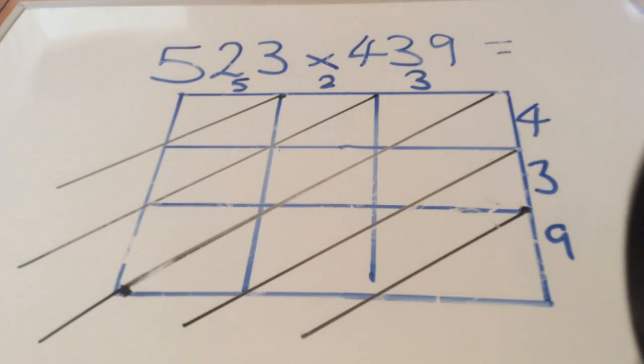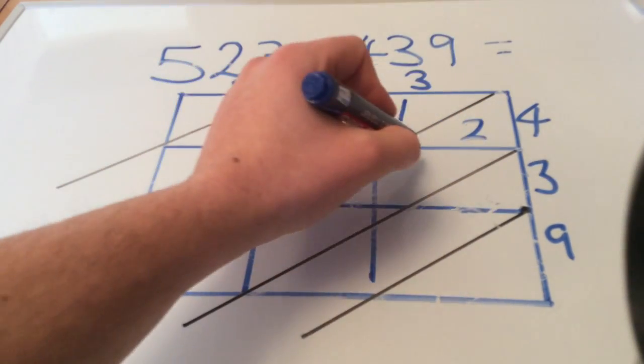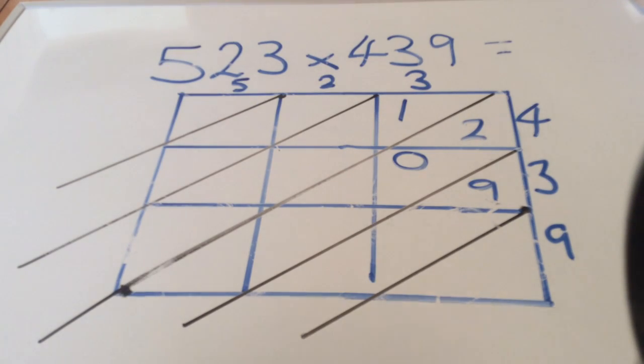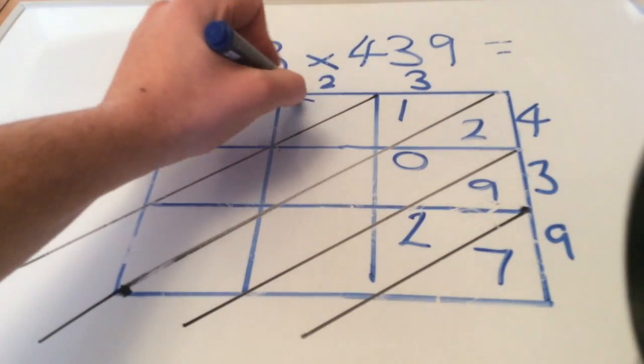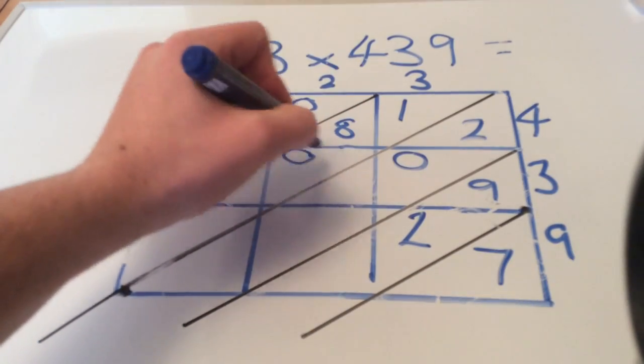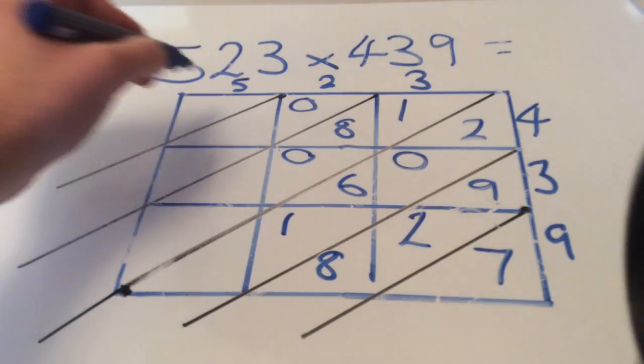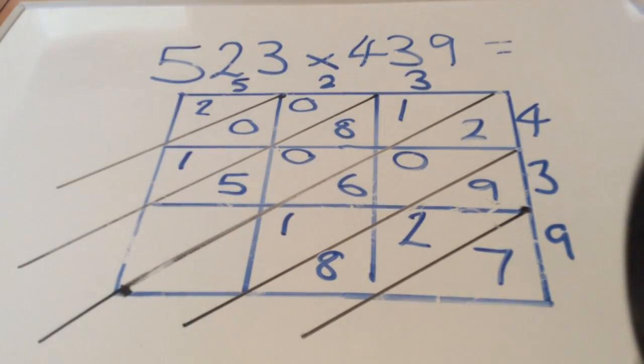Three times four is twelve, so one ten, two units. Three times three is nine, so zero tens, nine units. Important: if your answer is just one digit, do put the zero tens in. Three times nine is twenty-seven, two tens, seven units. Two fours is eight. Two threes is six. Two nines, eighteen. Five fours is twenty. Five times three, fifteen. Five times nine, forty-five.